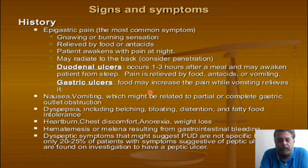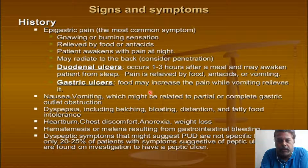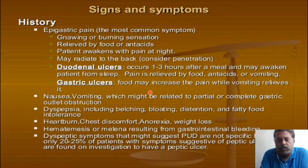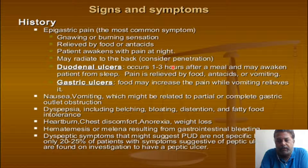The signs and symptoms of peptic ulcer disease: the most common symptoms are epigastric pain which may be gnawing or burning. It may be relieved by food or antacids. The patient may awaken at night because of the pain. The pain may radiate to the back, which may be a sign of perforation. Duodenal ulcers occur especially one to three hours after meal and may awaken the patient from sleep, compared to gastric ulcers.